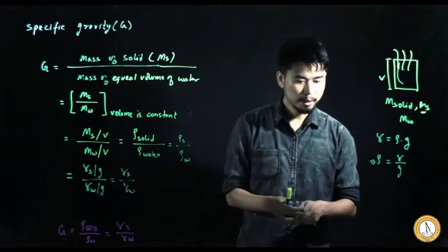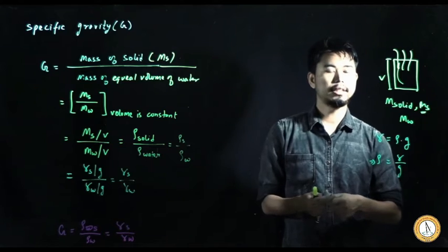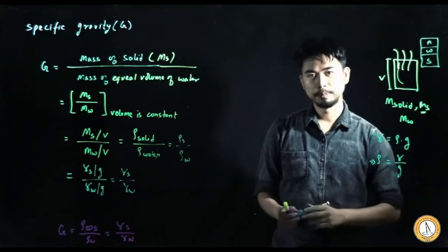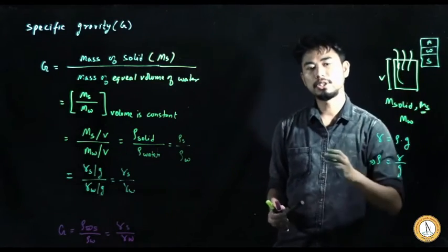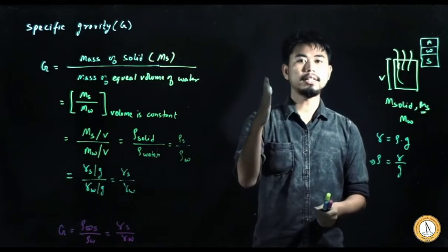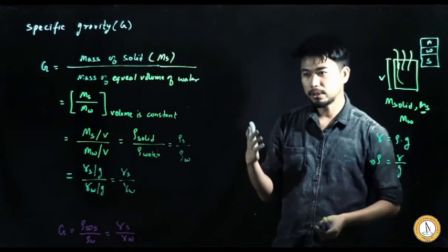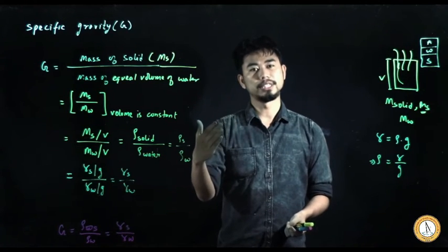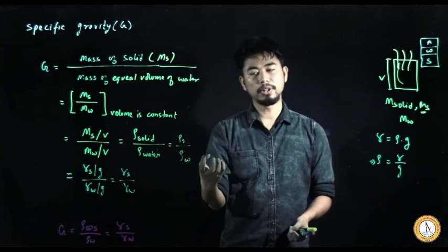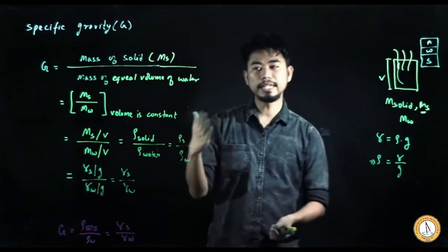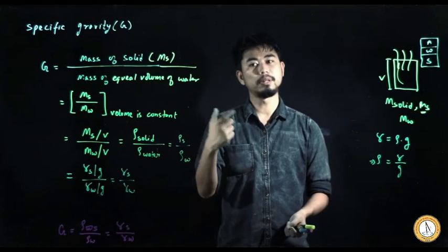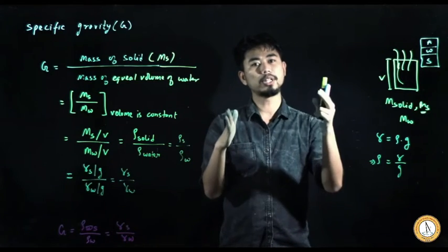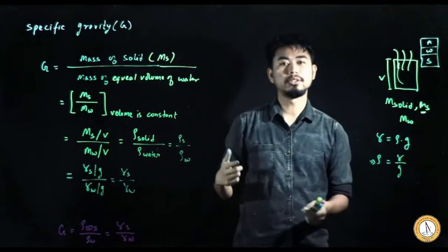From the block diagram discussed earlier, the soil mass has solid, water, and air. The solid component is fixed — matter can neither be created nor destroyed, so solid particles always remain constant. What changes is the water: due to rain, water enters the soil and total weight increases; by evaporation, water is removed and total weight decreases. But weight of solid always remains the same.